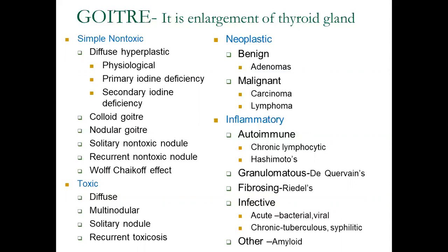Simple non-toxic goiter is what we will be discussing today in two parts. The first part deals with diffuse hyperplastic goiter, colloid goiter, and nodular goiter. The second part deals with solitary nodule and recurrent nodule. Toxic goiter is similarly classified into diffuse goiter, nodular goiter, and solitary nodule. Neoplastic goiter includes benign swellings like adenoma and malignant goiters like carcinoma in 95% of cases and lymphoma in 5% of cases.